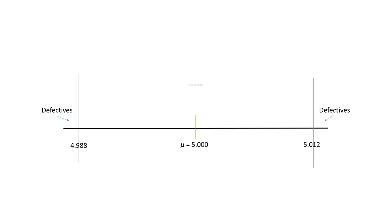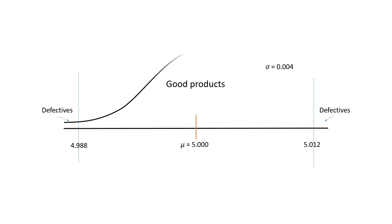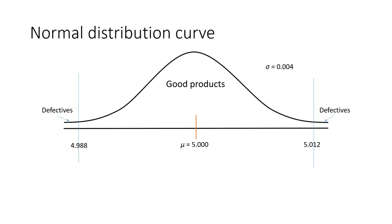Any product produced longer than 5.012 inches is termed a defective unit, and all products produced within the specification limits are good products. We know the standard deviation of the process is 0.004 inches. Therefore, we can draw a normal distribution curve that this process would follow, with a mean of 5.000 inches and a standard deviation of 0.004 inches. We can calculate the proportion of manufactured units below 4.988 or above 5.012 inches.